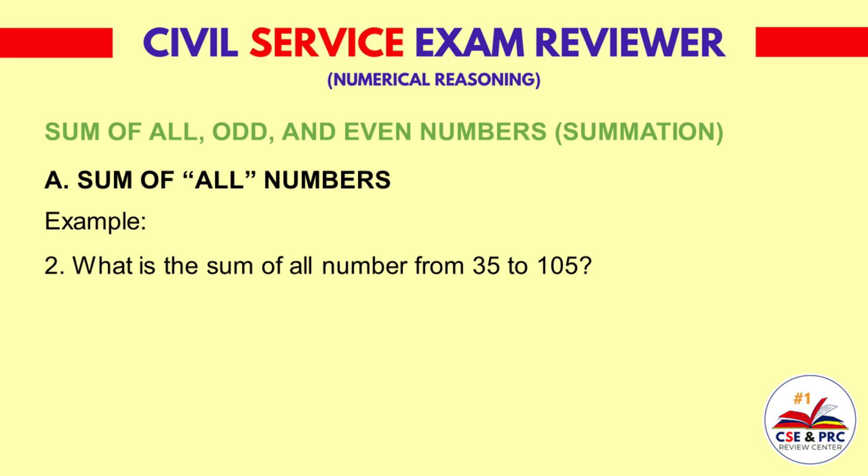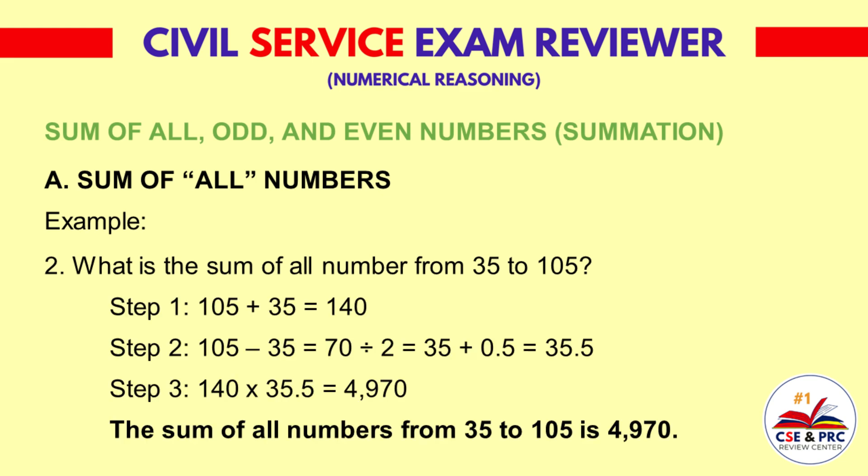Example 2: What is the sum of all numbers from 35 to 105? Follow the same steps. Step 1: 105 plus 35 is equal to 140. Step 2: 105 minus 35 equals 70, divided by 2 equals 35, plus 0.5 equals 35.5. Step 3: 140 times 35.5 is equal to 4970. The sum of all numbers from 35 to 105 is 4970.